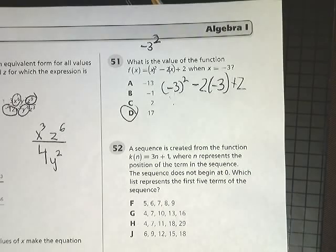Tennessee Indicourse Algebra 1 Practice Test. This is question number 52. It says a sequence is created from the function 3n plus 1.